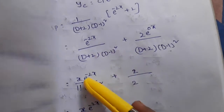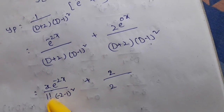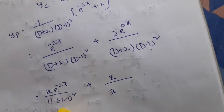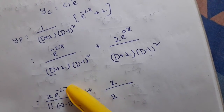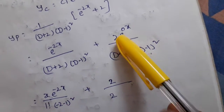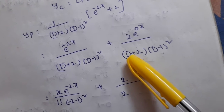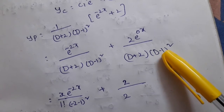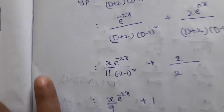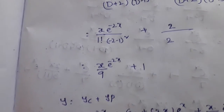Since (D+2) has power 1, we write x¹/1! · e^(-2x) / 9. For the constant term 2, write it as 2·e^(0x) and replace D with 0: (0+2)(0-1)² = 2·1 = 2, so 2/2 = 1. Therefore yp = x·e^(-2x)/9 + 1. The general solution is y = yc + yp.